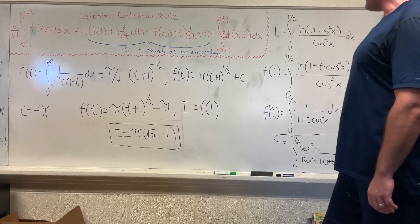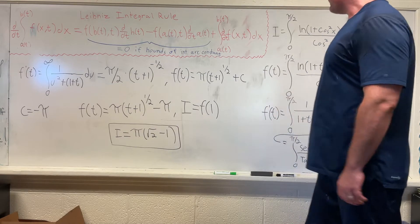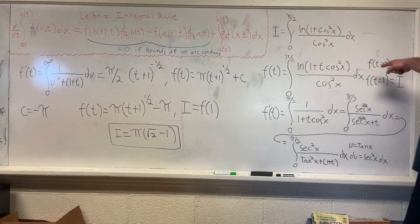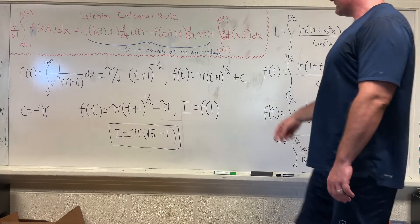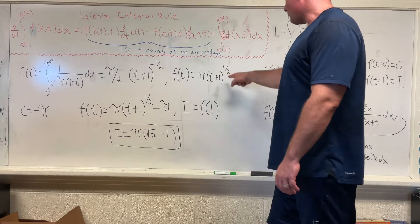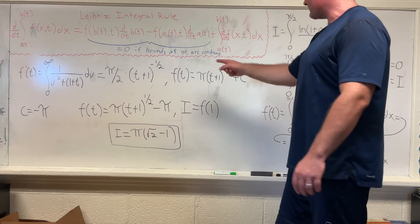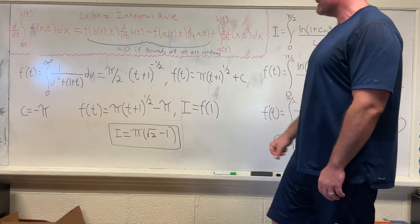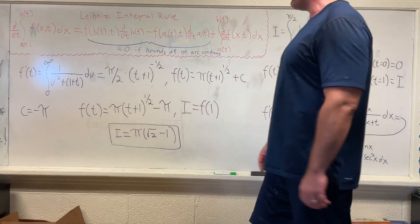And we can get the value for c by plugging in the fact that f(0) is equal to 0. So we get 0 is equal to π times the square root of 1, which is just 1. So 0 is equal to π plus c, giving us c is equal to negative π.